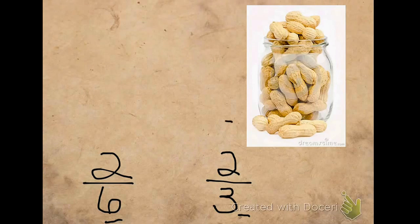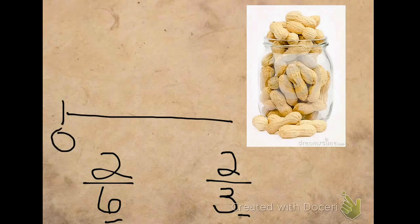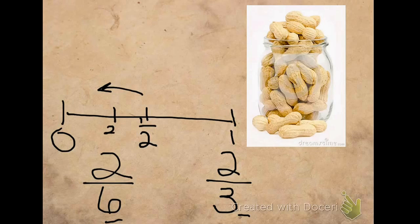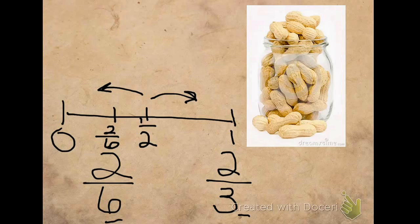Let's look at our benchmark fractions we're going to use today. We have 0, we have half, and we have 1. I know that 2 sixths is going to be less than 1 half, and I know this because 3 sixths is the same as 1 half. So, I'm going to draw my 2 sixths about here. Then, I'm going to look at 2 thirds. I know that 2 thirds is greater than 1 half, so I'm going to draw my 2 thirds about here.